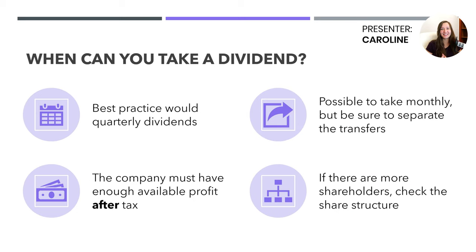So when can you actually take a dividend? Best practice — and what HMRC likes — is to take quarterly dividends, so every three months. You just take a lump sum from the company based on what's available. It is possible to take monthly dividends, but be sure to separate the transfers out from things like salary, because you don't want HMRC to decide that everything should be taxed the same as salary. You'll also need to keep certain records when you issue a dividend.